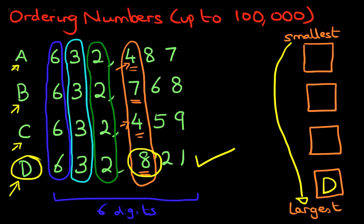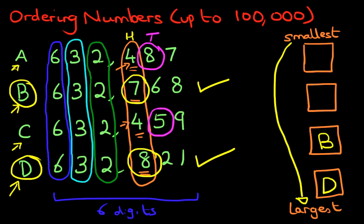We are left now with A and C, both having four in the hundreds. We cannot tell which is larger or smaller by looking at the hundreds, so we have to keep going to the right and look at the tens. For A we have eight, and for C we have five. Eight is the larger of the two, so A goes next. That leaves C, which has five in the tens column, so C goes at the top as the smallest.